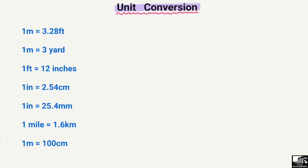For example, we have some units: 1 meter equals 3.28 feet, also 1 meter is 1.09 yards, and 1 foot is 12 inches, and so on. We have different conversion factors here. For instance, 1 foot is equal to 12 inches.